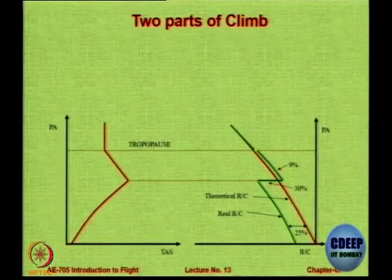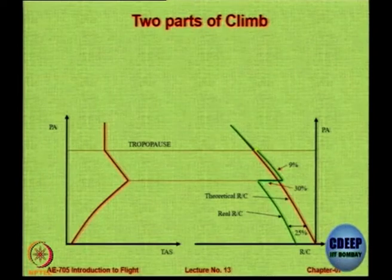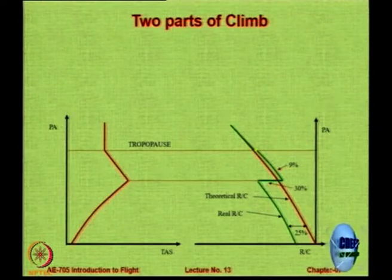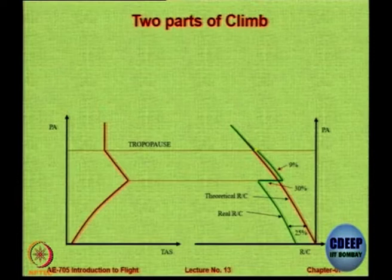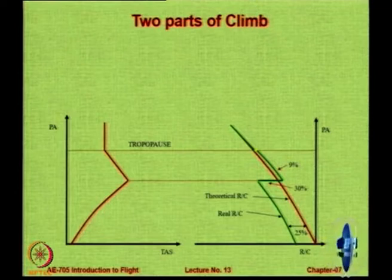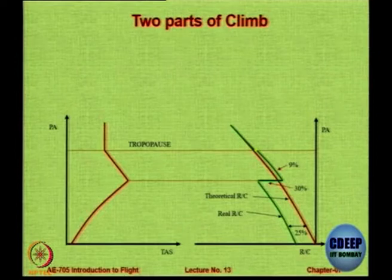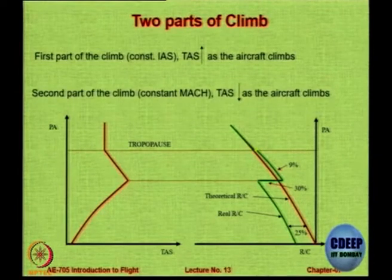On the power available vs. true airspeed curve, there is a particular kink altitude — up to that point you fly at a constant speed, then proceed to a constant Mach number climb. The red theoretical line for rate of climb and the green line showing the actual ROC diverge due to atmospheric effects. As an aircraft climbs at constant IAS, its true airspeed increases, so drag increases, causing T minus D and the ROC to reduce. First part of the climb is constant IAS; second part is constant Mach number, where TAS reduces.